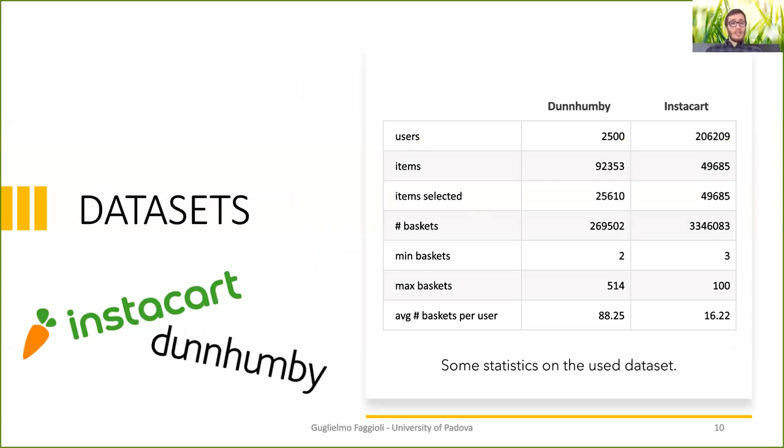To evaluate our systems, we considered two datasets. They are very commonly used datasets in this specific task. One is Instacart, and the second one is Dunhamby. We considered these two datasets since they provide us diversity into our analysis. As you can see, Instacart is a very big dataset with many users, but on average a small basket. On the other hand, Dunhamby contains less users, but with very big baskets. Additionally, we removed items that weren't present in more than five baskets.